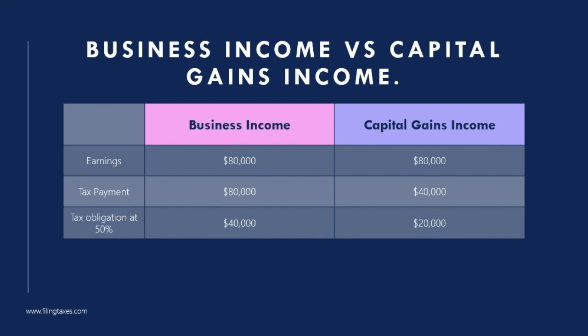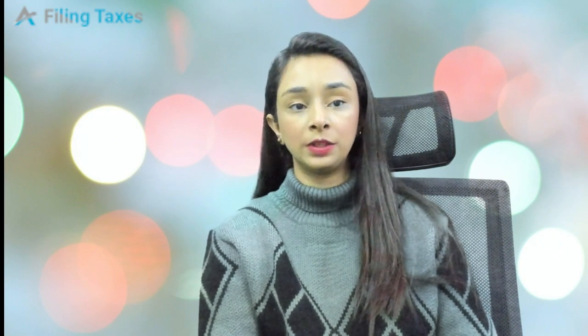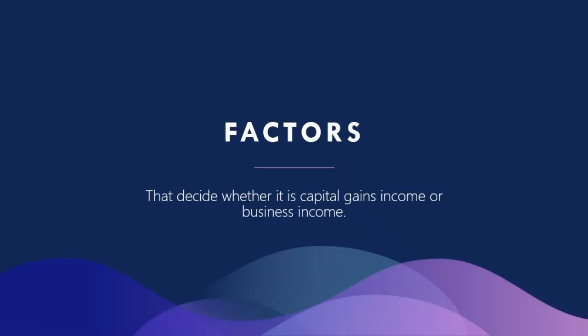This results in a forty thousand dollar personal income tax. However, if treated as capital gains income, only forty thousand dollars of the profit is included, leading to a twenty thousand dollar tax payment. Clearly, Dave prefers the capital gains treatment due to the tax savings.